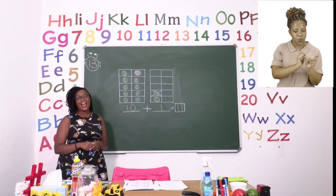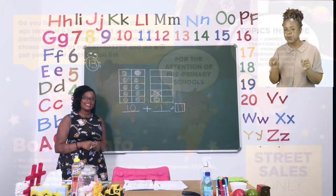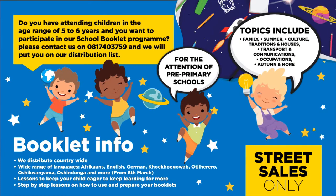And I will see you soon after the advert break. Do you have children in the age range of five to six years and want to participate in our school booklet program? Please contact us on 0817 43759 and we will put you on our distribution list for the attention of pre-primary schools. Topics include family, summer, culture, traditions and houses, transport and communications, occupations, autumn and more. We distribute countrywide in over seven different languages.